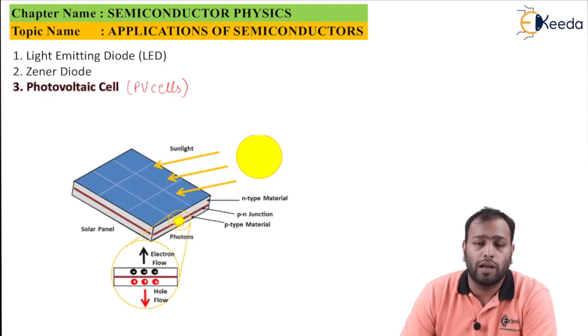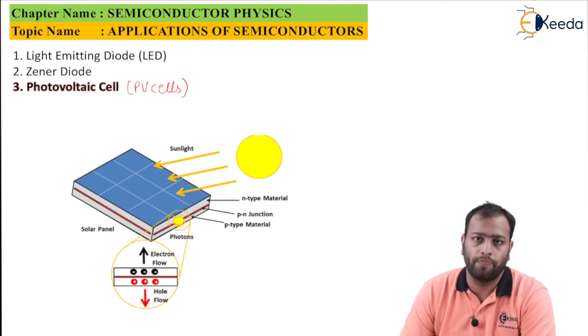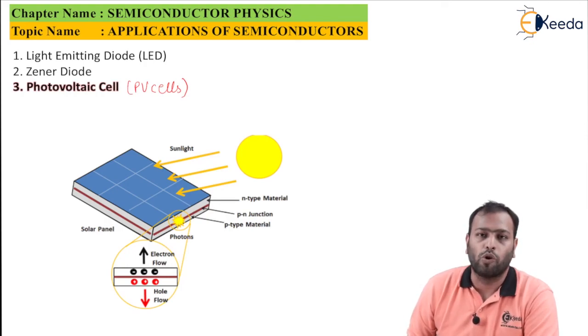So always remember solar cell is going to give you a DC current or a direct voltage. With the help of inverter only you can convert this into a sinusoidal voltage or an AC voltage to get it applications on your household devices. Thank you so much for watching this video. For more content stay tuned to eKeda and subscribe to eKeda.